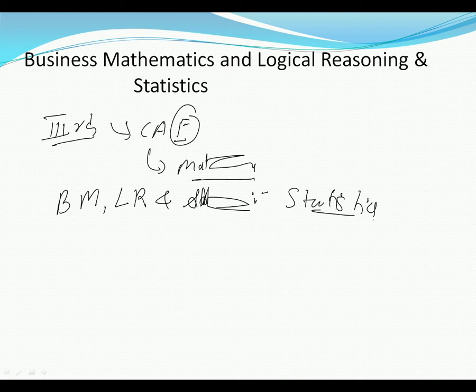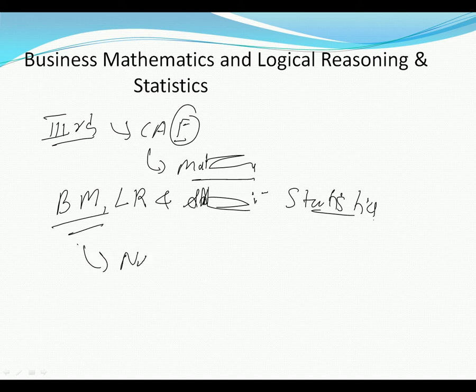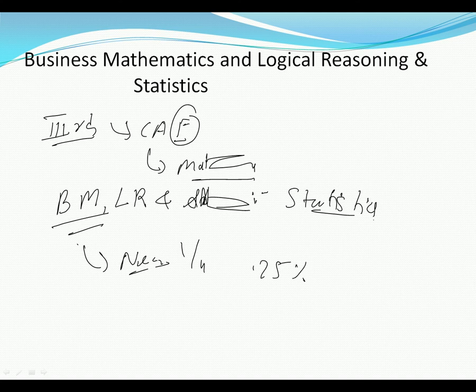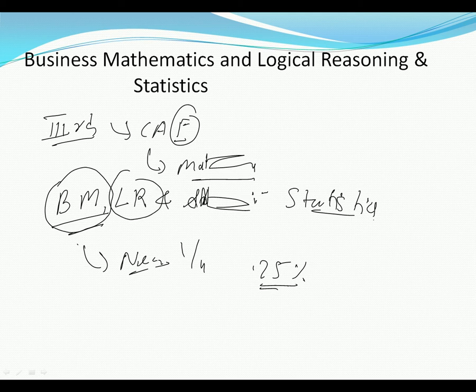This is an optional objective paper. Out of four papers, two papers are objective and this one is also objective with a negative marking of one-fourth, that is 0.25%. This paper has been divided into three parts: Business Mathematics, Logical Reasoning, and Statistics.